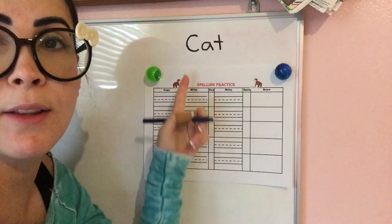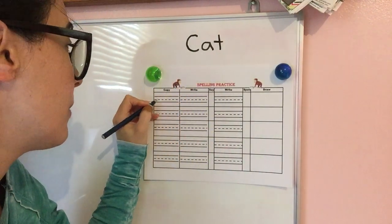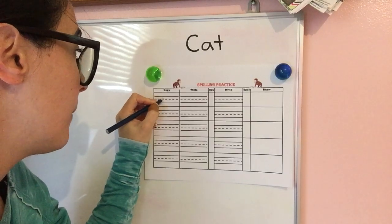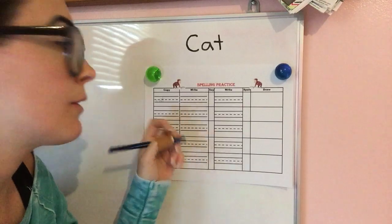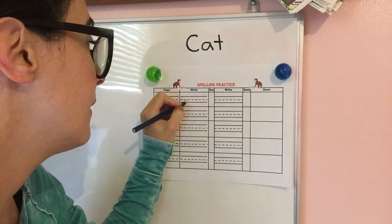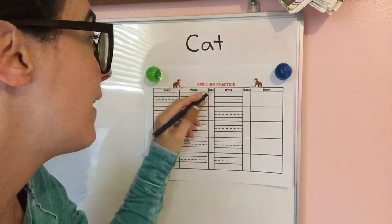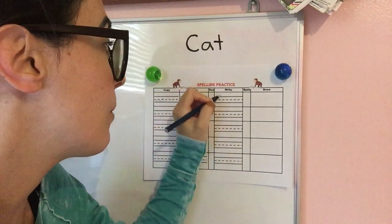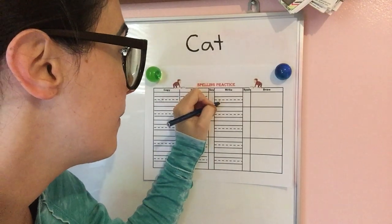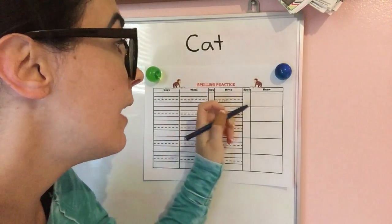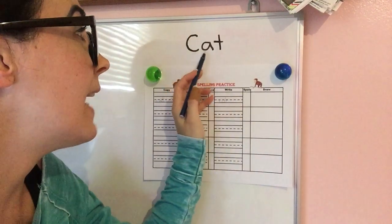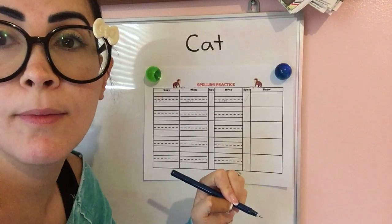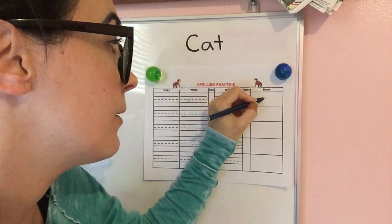So let's say the word is cat. They visually see it, so they copy the word cat. Then they have to write the word cat again. Then they have to say it — cat. Check it off because they said it. Then they write the word again — cat. Then they have to spell it: C-A-T spells cat. They get to check it off, and then they get to draw a picture of a cat.